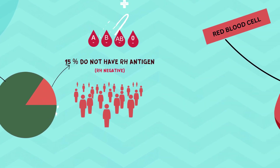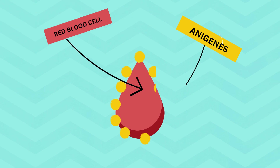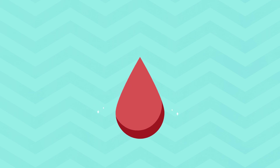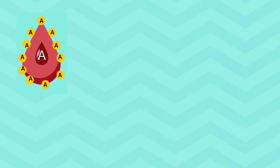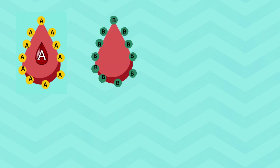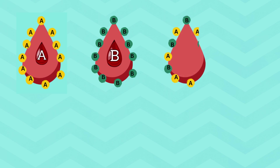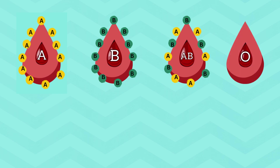Let's discuss the four main blood groups, why they differ, and what determines them. To put it simply, blood types differ according to the presence or absence of antigens in the blood cells. Antigens, also known as surface markers, are found on the surface of the red blood cells. For example, if your red blood cells have only A type antigens on their surface, your blood group is A. Respectively, if your red blood cells have only B type antigens, your blood group is B. If both A and B antigens can be found on the surface, the blood group is AB. If there are no A or B type antigens on the surface, that's when we refer to it as the O blood group.